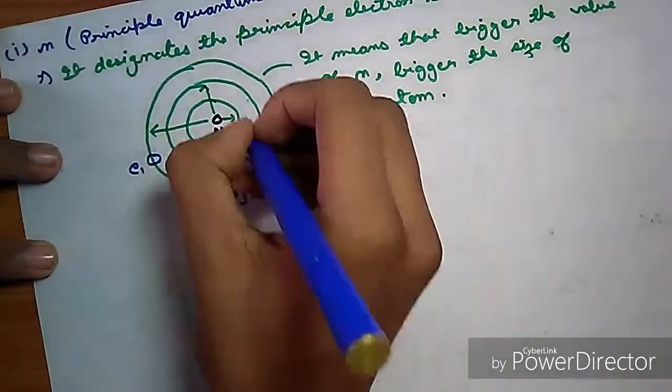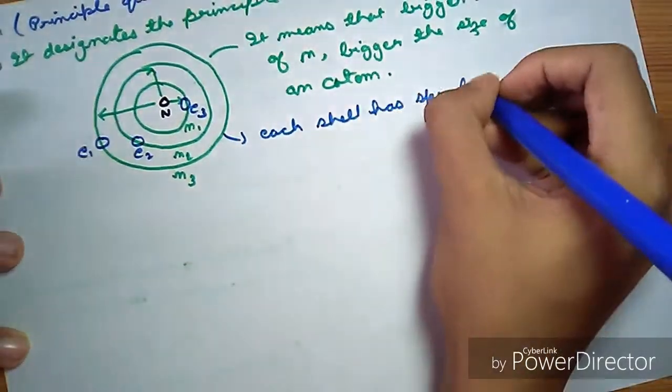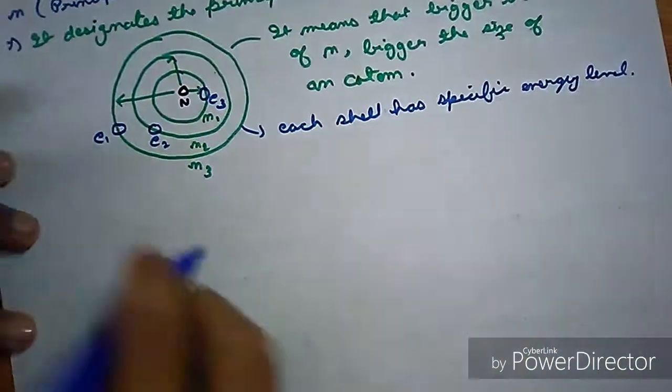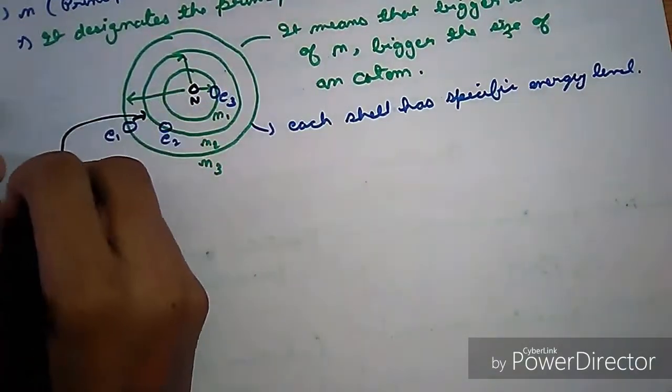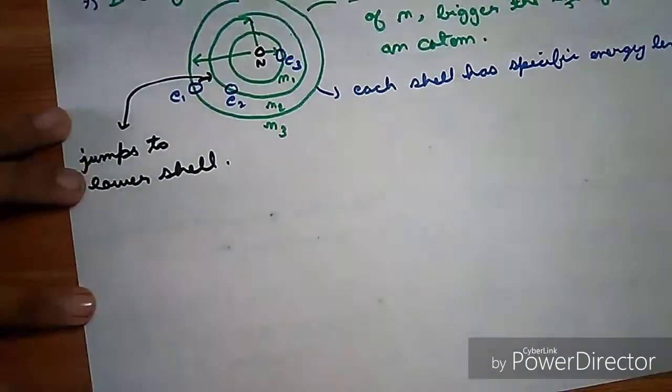Take a few electrons orbiting in each shell. Each shell has a specific energy level. When an electron jumps to a lower shell, it loses a photon.